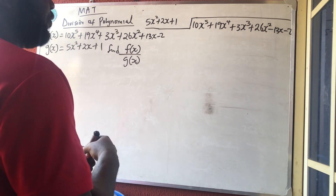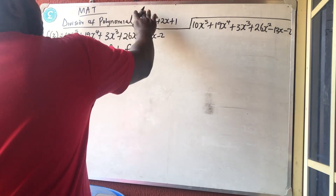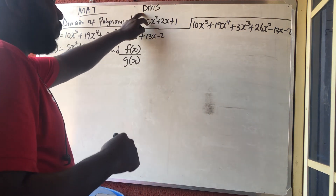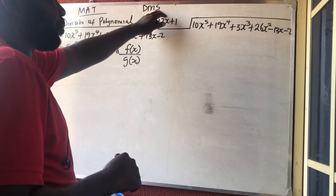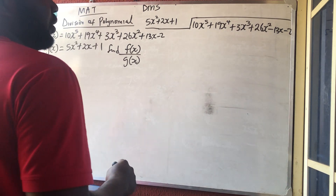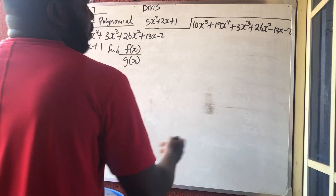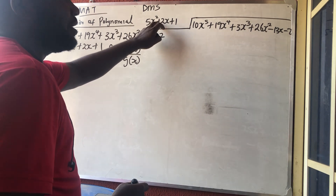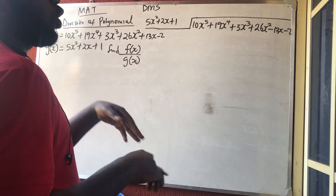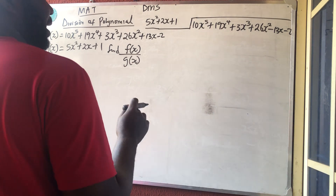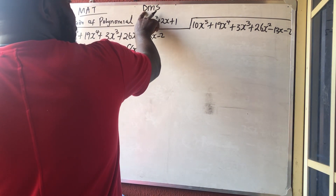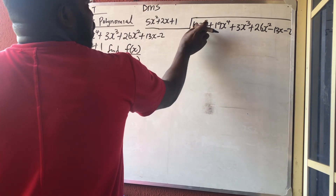In division of polynomials there is a formula we use called DMS — Division, Multiplication, and Subtraction. You continue this DMS until the remainder you get is less than the divisor, then you stop. Even if there are four steps, you continue until the remainder is less than the divisor.